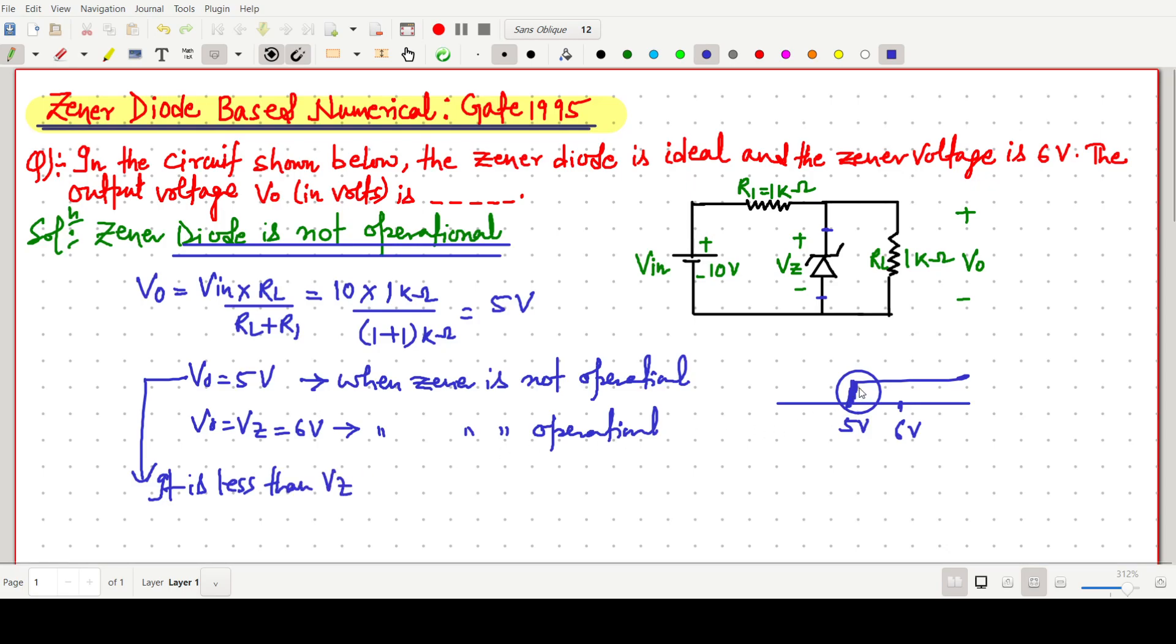So the value will be 5V output, so this V0 value will be 5V output. Or through this graph, we can easily say that this one is 5V when diode is not operational,